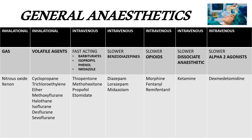The last group is alpha-2 agonists, the example being dexmedetomidine. It has more of a sedative, analgesic, and anxiolytic effect than a true general anesthetic effect, so it is used as an adjuvant alongside other general anesthetics. The dosing is an infusion of 0.2 to 0.7 micrograms per kilogram per hour after an initial bolus of 1 microgram per kilogram. A key advantage is that it preserves breathing even at higher doses with no respiratory depression, but the downside is hypotension and bradycardia.